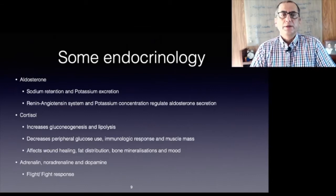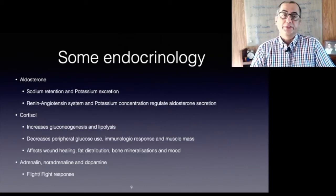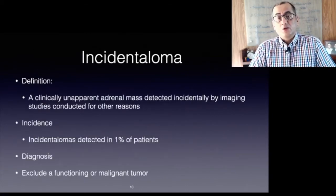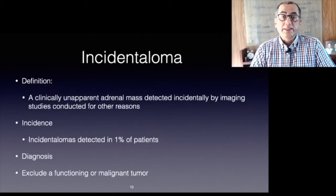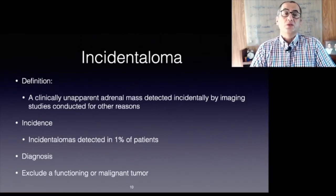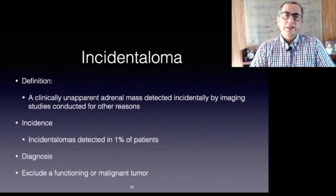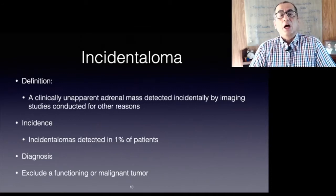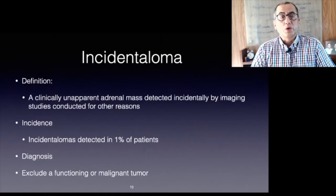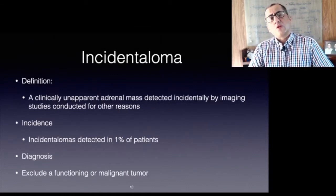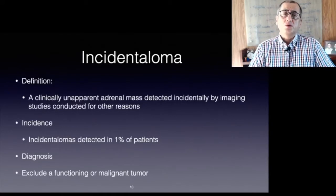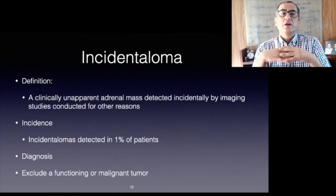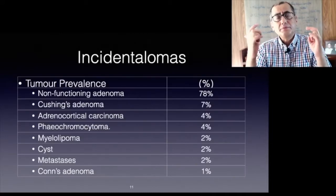An incidentaloma is an adrenal mass detected incidentally by imaging studies conducted for other reasons, not previously known to be present or causing symptoms. Incidentalomas may be detected in around one percent of patients. When one is identified, a complete history and clinical examination is required; occasionally a previous occult endocrine disturbance will come to light. A biochemical workup for hormone excess and additional imaging studies are needed. The main goal is to exclude a functioning or malignant adrenal tumor.